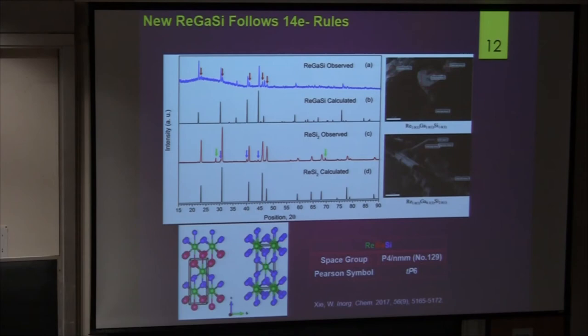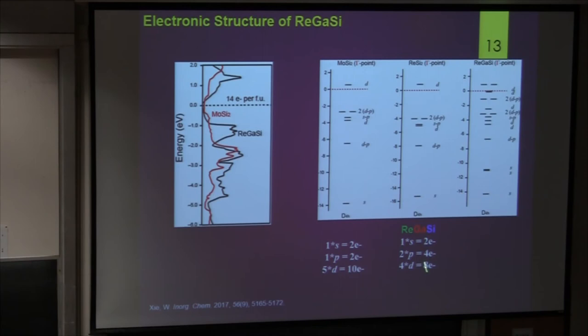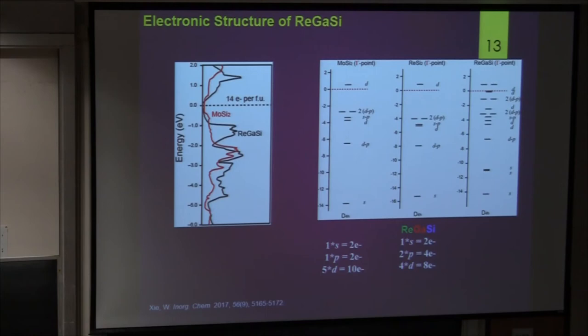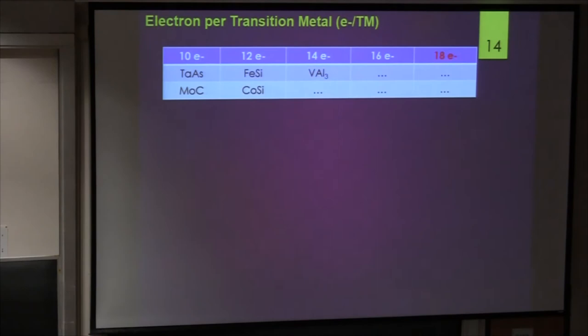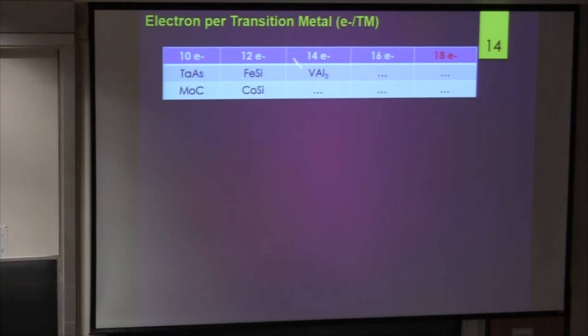Looking at the molecular orbitals for rhenium-gallium-silicide, it's the 4d orbital with 2p and 1s orbitals — total 14 electrons. I initially thought it was 5d+1p+1s, but it turned out to be 4+2+1. This makes me think: if 4+2+1 works and 5+1+1 works, then theoretically we can have all kinds of combinations: 5+1, 5+2, 5+1+2, 4+1, and so on. For intermetallics, everyone collaborates together, so theoretically we can find not only 18 electrons but also 10, 12, 14, 16 electrons.